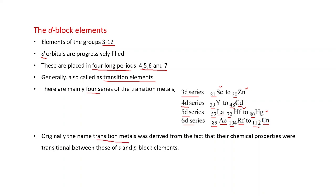Originally the name transition metals was derived from the fact that their chemical properties were transitional between those of S and P block elements. Actually, S block elements are metals and if we go from left to right in the periodic table, then in P block elements which are on the right side, the nature of elements changes from metals to non-metals.